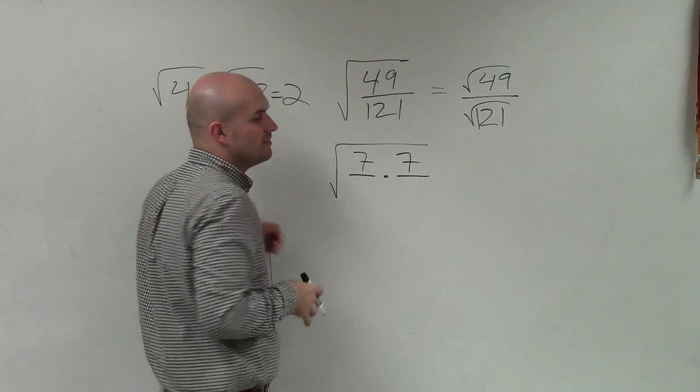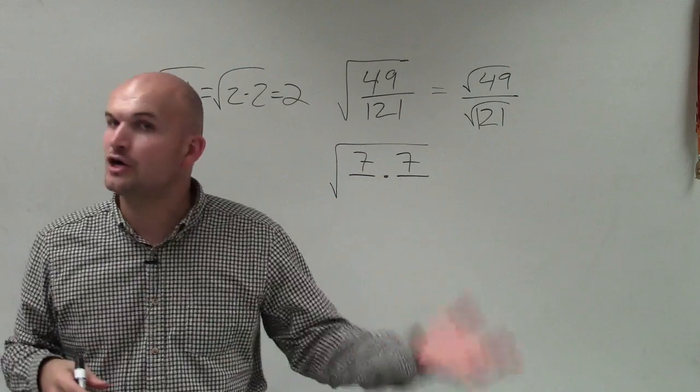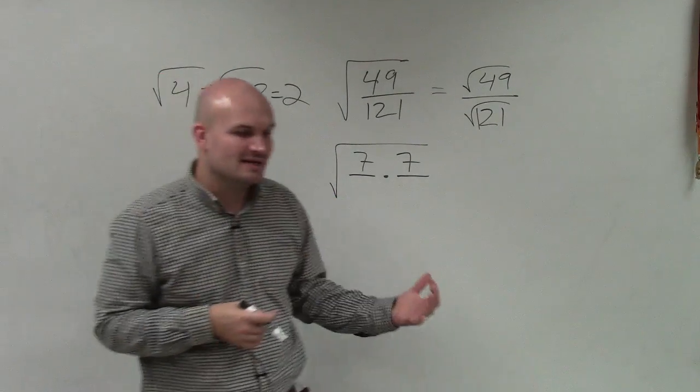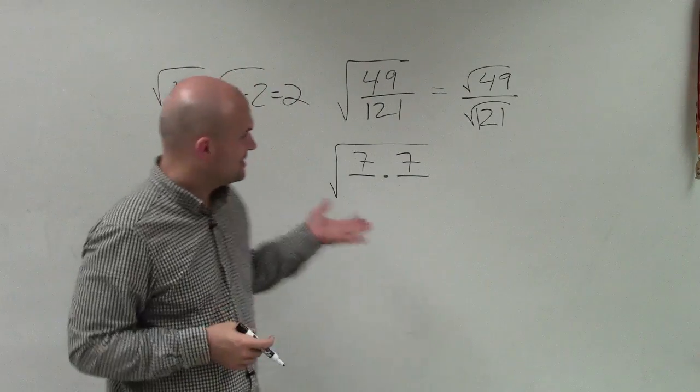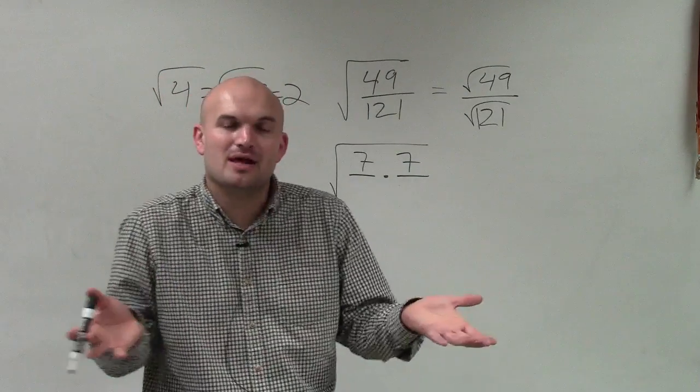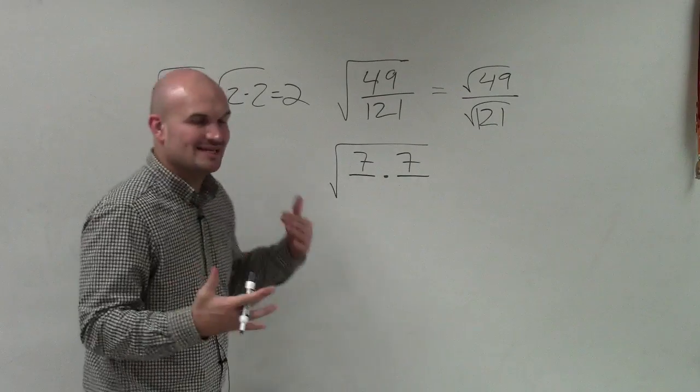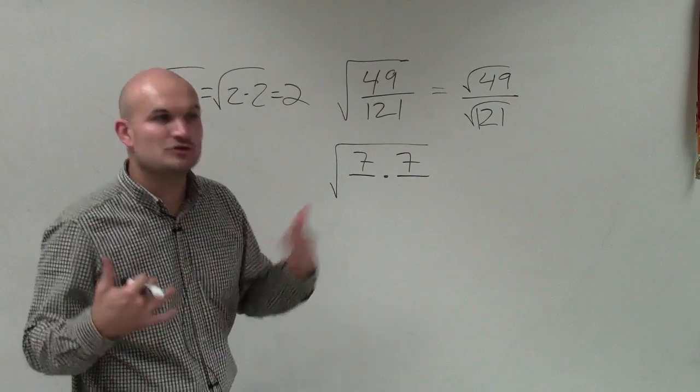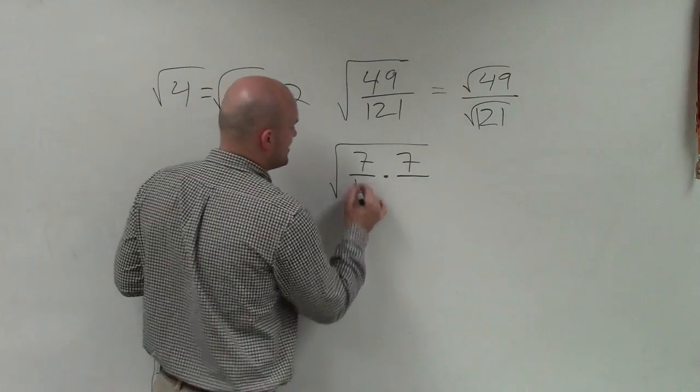What numbers multiplied by each other are going to give you 121? Well, we know 10 times 10 is 100, so it's going to be probably pretty close to that. You can check, but it would probably be good reasoning to look into 11 times 11 or 12 times 12. Well, the answer ends up being 11.